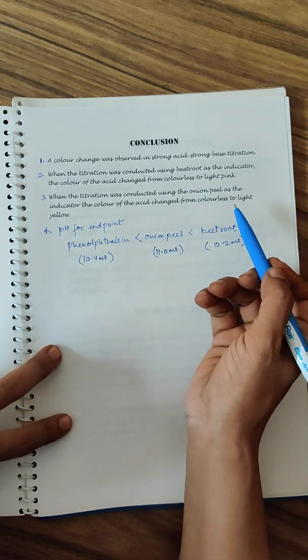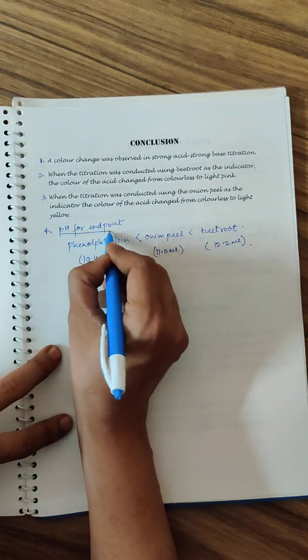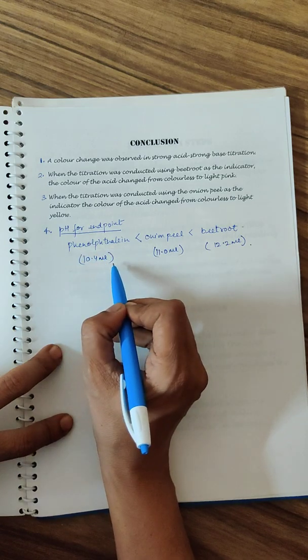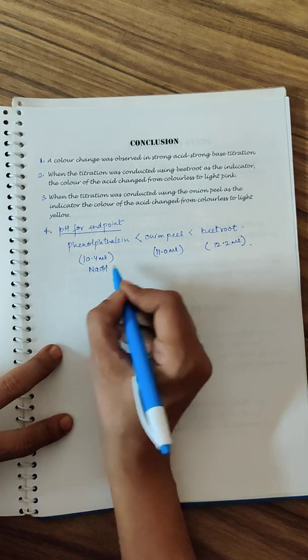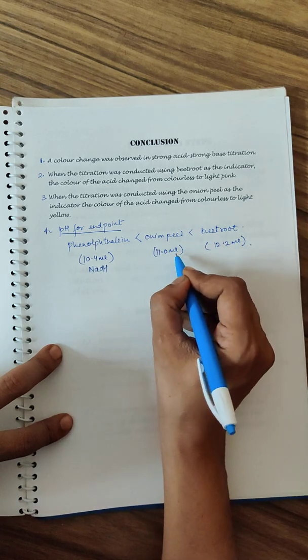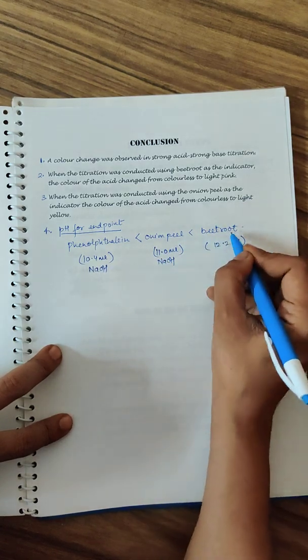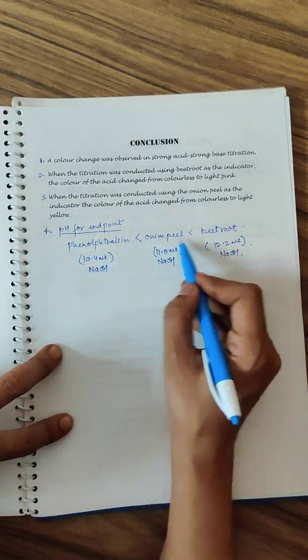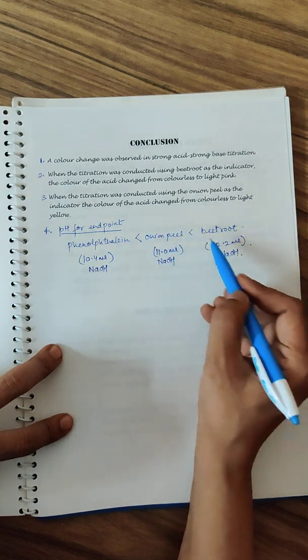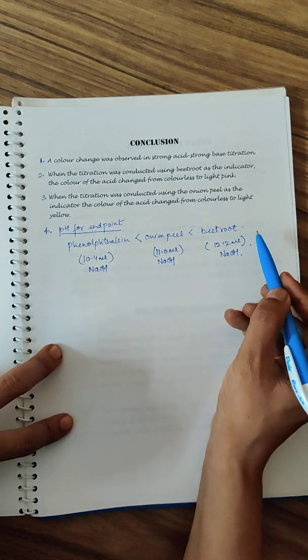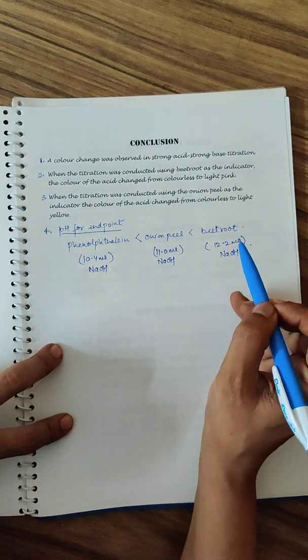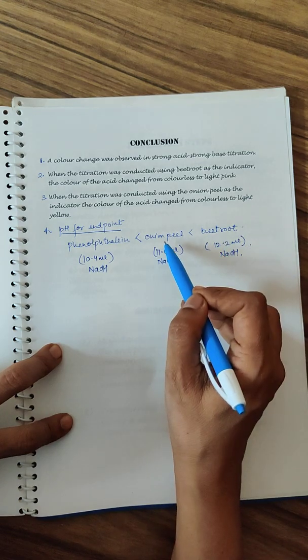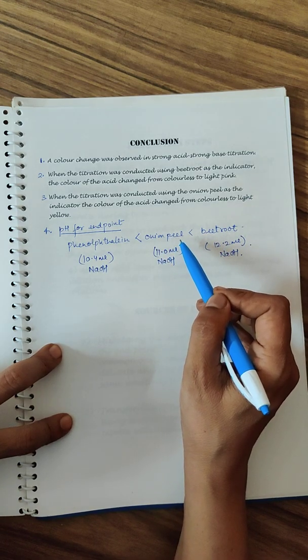Finally, the most important thing is the pH. For phenolphthalein the color changed at 10.4 ml of NaOH. Onion peel it changed at 11.0 ml of NaOH. Beetroot it showed a color change at 12.2 ml of NaOH. This means color change was shown at a higher amount of base, at a higher pH. Beetroot shows the color change at a higher pH. pH closer to phenolphthalein, as compared to beetroot, onion peel can still be preferred.